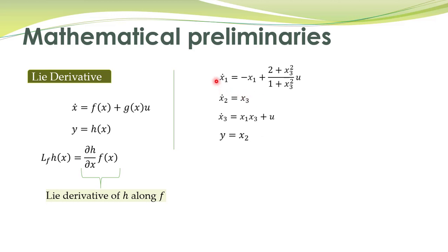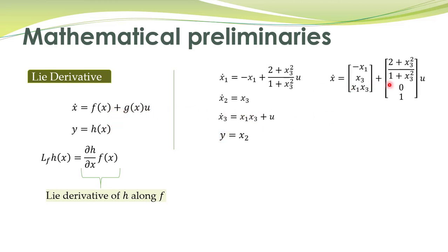We can demonstrate this with a simple example. Here we have a non-linear system with state equations and an output equation written in a particular format. Here this is f of x, this is g of x, and this is h of x. The Lie derivative of h of x along f of x, given by this definition, is written here.